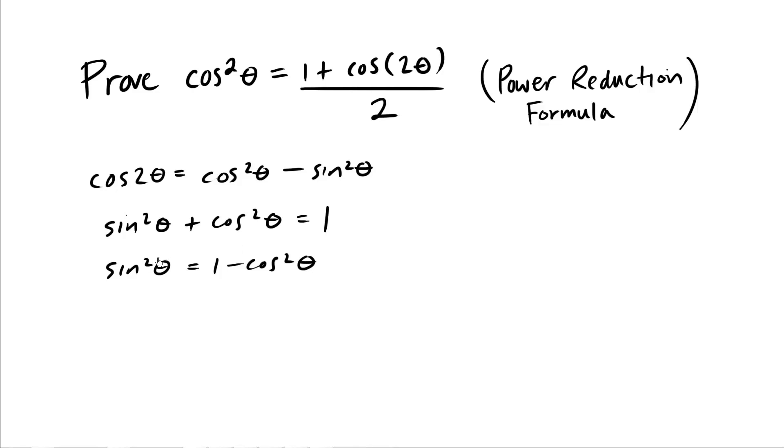So now we can actually plug this result into here. So this result sine squared theta goes into here, and we end up with cosine 2 theta equals cosine squared theta minus 1 minus cosine squared theta.